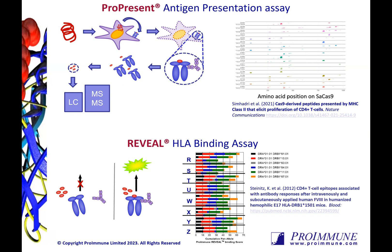You can also evaluate peptide binding to MHC molecules in our cell-free Reveal system that utilizes recombinant MHC molecules. This approach can be a cost-effective and high-throughput way to evaluate regions of your biologic, such as the CDR, by synthesizing overlapping 15-mer peptides and assessing binding to any of our 55 Class 2 alleles. In this example from Baxter, peptide families from Factor VIII were assessed for binding across the Class 2 supertypes, and the cumulative pan-allele binding score is shown. The Reveal assay can give impactful information on peptide binding without having to purify any protein.